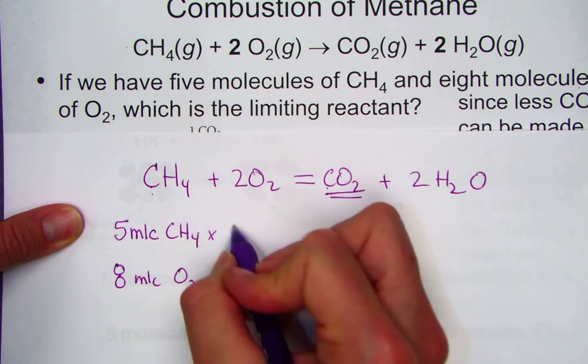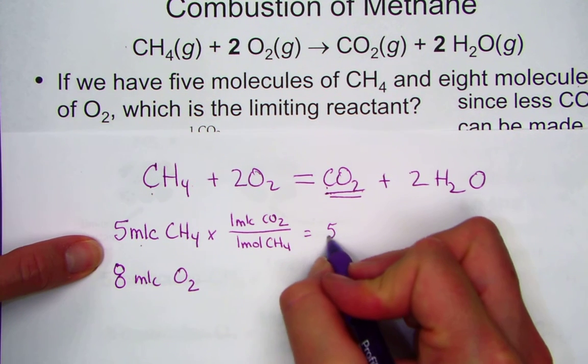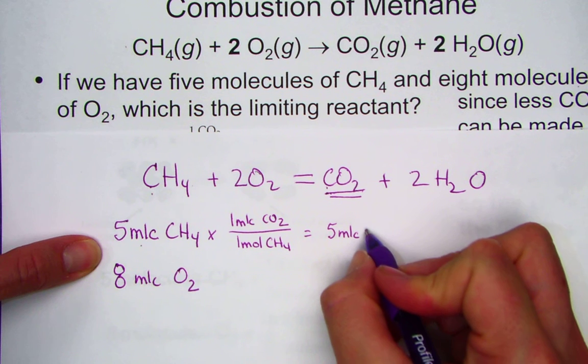You'll see me abbreviate that as LR. Limiting reagent or limiting reactant is the one that gets completely consumed and determines how much maximum product we can make.